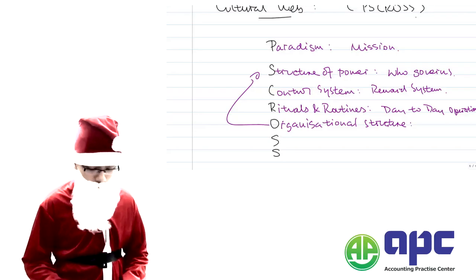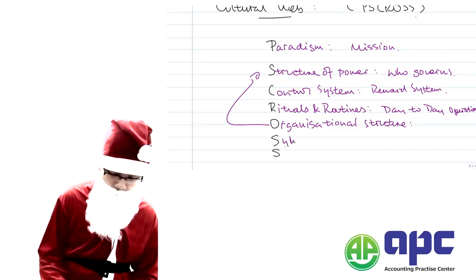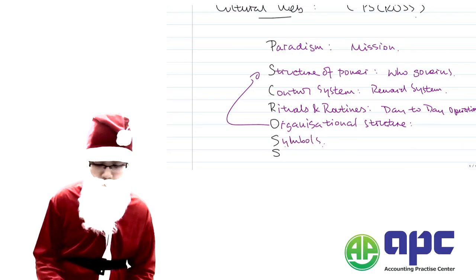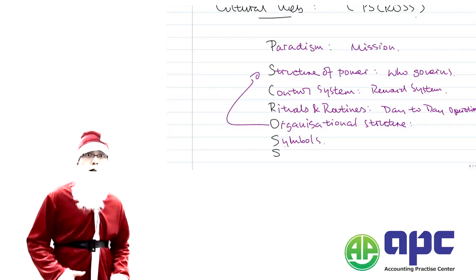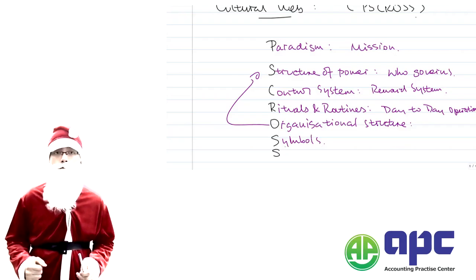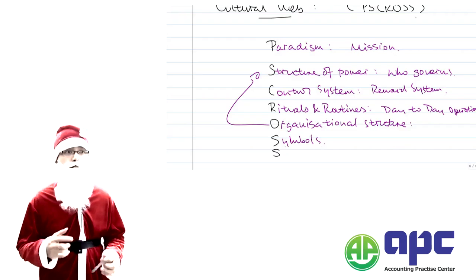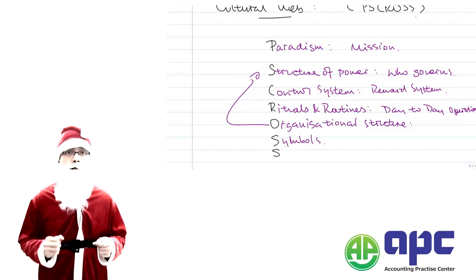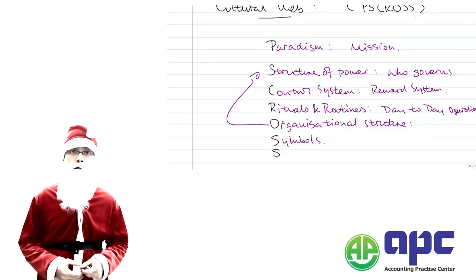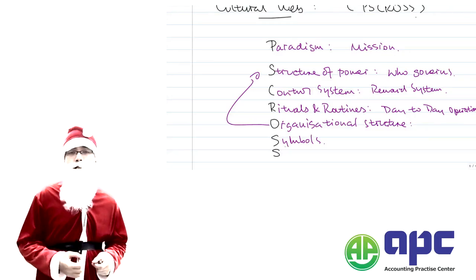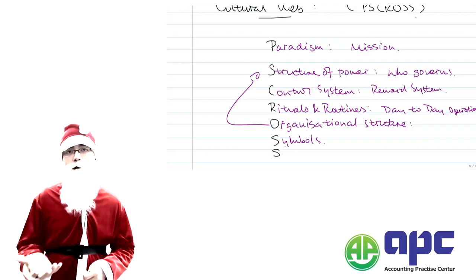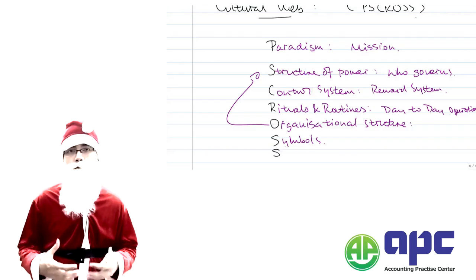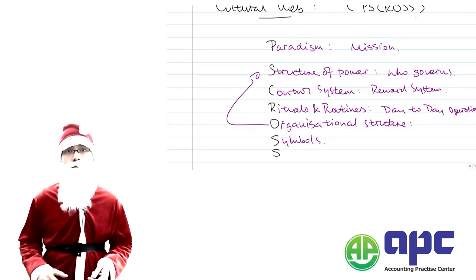The first of the two final Ss stands for Symbols. For example, if you are the finance director and you stay within the company for at least 10 years, the company might give you a sports car, a fancy house, or a nice office — that would be a symbol.